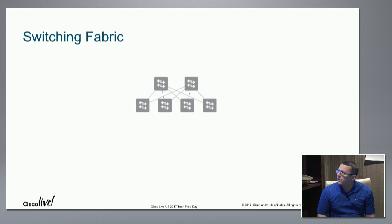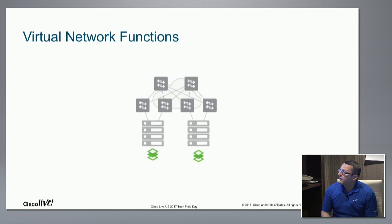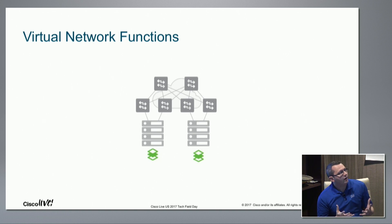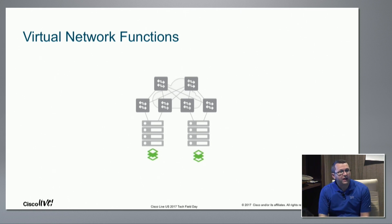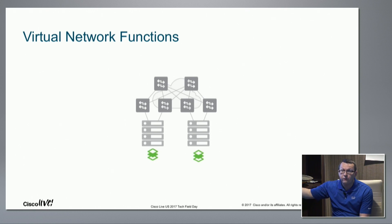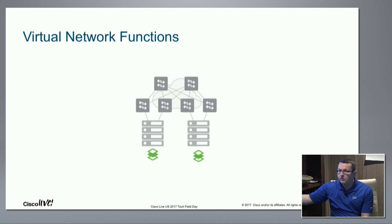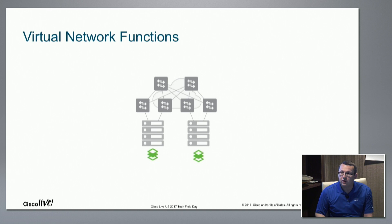Let's talk about the switching fabric. No switching fabric is complete without a cloud under it. Looking at this, it resembles a regular data center — we've got a spine-leaf switching fabric with compute underneath. The biggest difference is that where we used to run standard applications on compute, we've got a hypervisor specifically built for network functions. Instead of application VMs, what you'll primarily find on a CSP 2100 are virtual network functions.